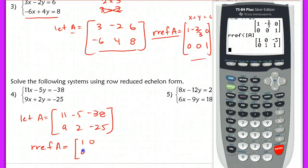I hit enter and I have this matrix here: 1, 0, 0, 1, negative 3, 1.